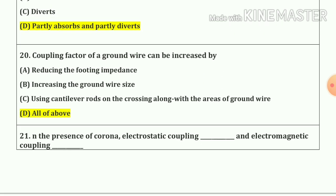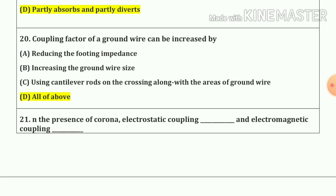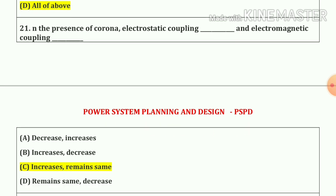Question number 20. Coupling factor of a ground wire can be increased by all of the above — A, B and C. Question number 21. The presence of corona: electrostatic coupling increases and electromagnetic coupling remains the same. Our answer is option C.